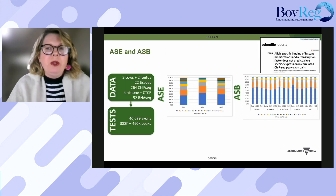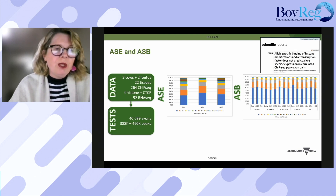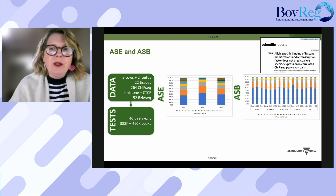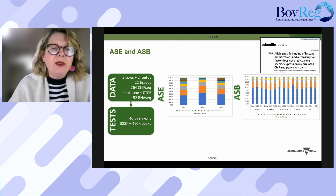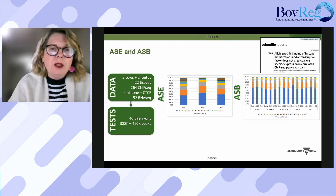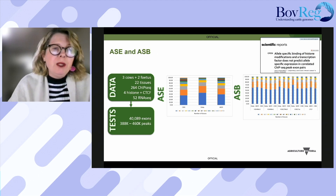We have a real interest in allele-specific regulation and expression of genes. Claire extended the dataset from 6 tissues to 22 tissues, testing over 40,000 exons and 380,000 to 460,000 ChIP-seq peaks for five FANG marks for allele-specific expression or binding. Although the majority of significant exons and peaks were tested in multiple tissues, a large proportion were only significant in one or few tissues. Allele-specific binding tends to be more tissue-specific at around 50–60%, compared to allele-specific expression at around 40%.